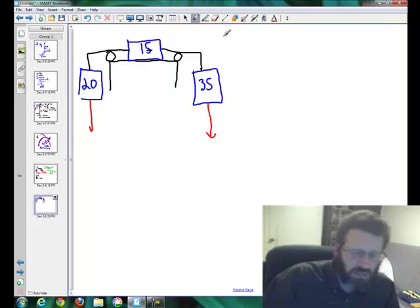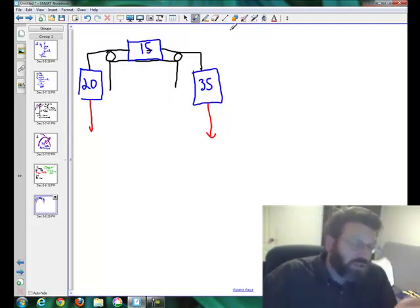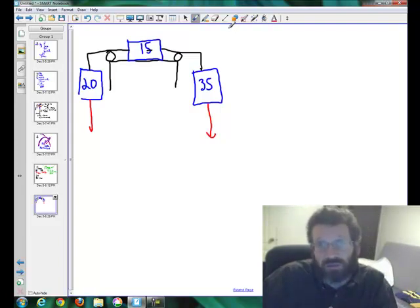We also know that we have a frictional force, but we don't know which way to apply it yet. We know that friction resists motion, we're just not sure which side. Well, common sense: we've got a 35 kilogram mass, 20 kilogram mass. Well, the 35 kilogram mass can have more force, so probably that's going down, 20 is going up, and the 15 is going towards 35.